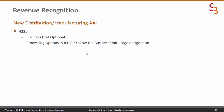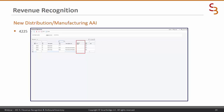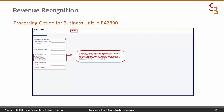The new distribution/manufacturing AAI is 4225. Again your business unit is optional, and the processing options in R42800 allow the business unit usage designation. Here is a picture of AAI 4225 — I defined one for all other category codes, but the two items I was using had IN30 as the GL class code in the item branch plant record.